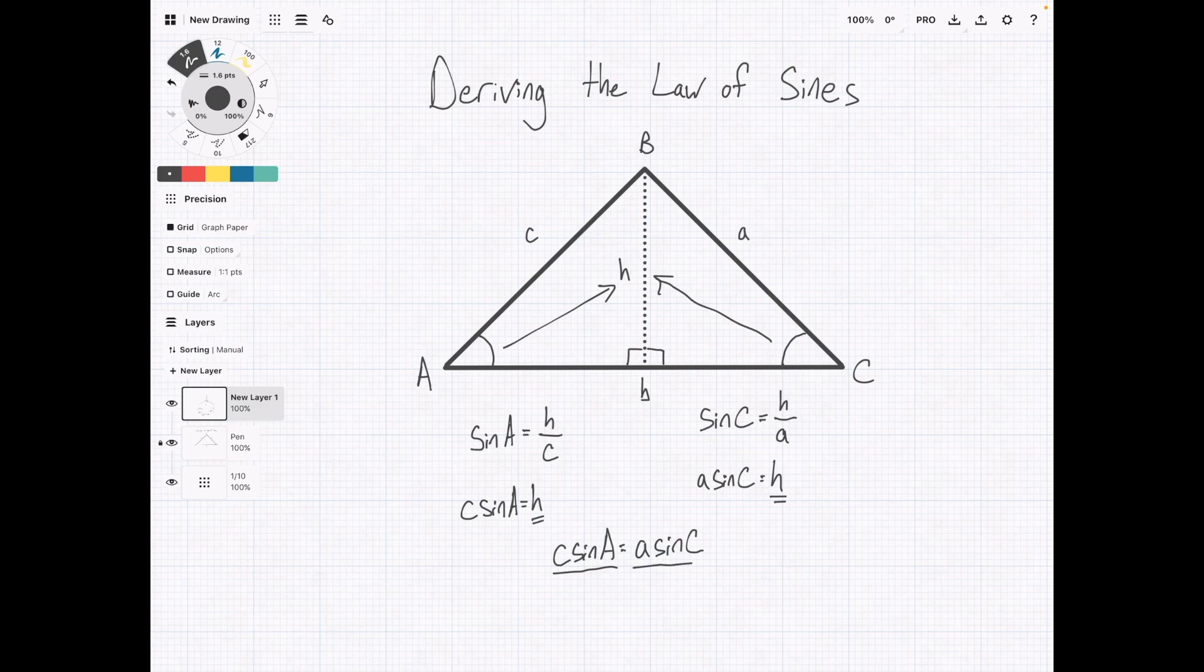Last step is to divide both of these sides by AC, which lets us cancel out these C's and these A's. And then what we're left with is sine of A over A equals sine of C over C. And that is the law of sines.